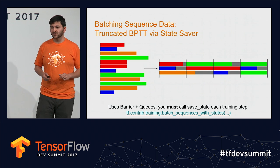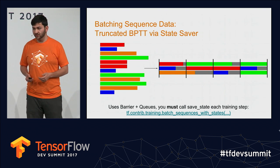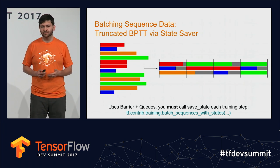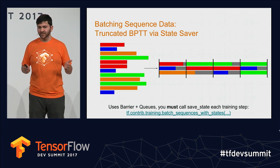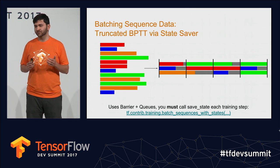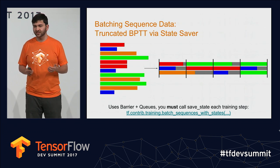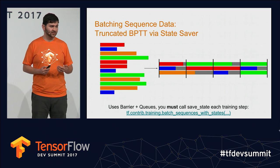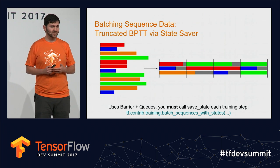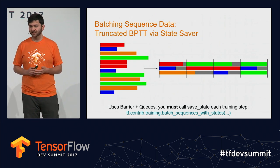For those interested in language models or variational autoencoders rather than sequence-to-sequence models, we have a state saver that allows you to implement truncated backpropagation through time. You pick a fixed number of time steps to unroll for, and any sequence longer than that gets split into multiple segments. When you finish a mini-batch, the state of any incomplete sequences is saved, bookkeeping is done in the background, and at the next training iteration that state is loaded so you can continue processing. We have a function for that called batch_sequences_with_states.